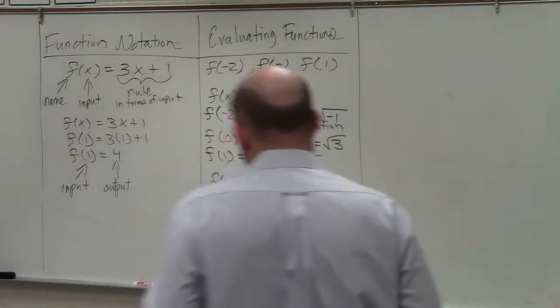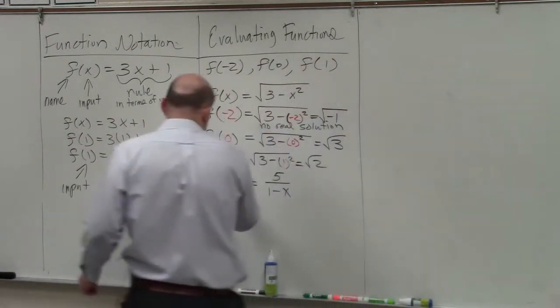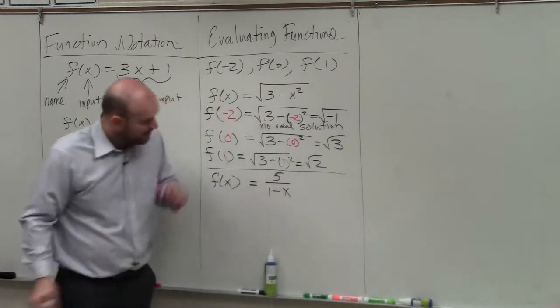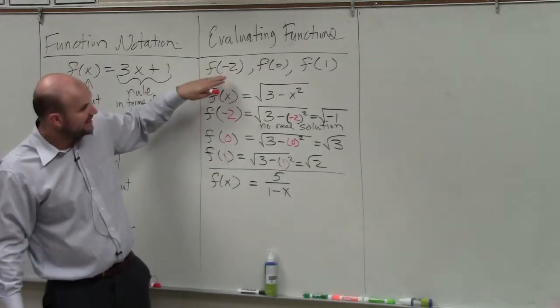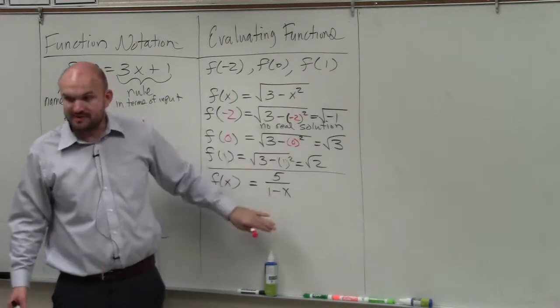Ladies and gentlemen, you're going to follow exactly the same rule. So if I have f of x equals 5 divided by 1 minus x, and I want to evaluate for these three values, you basically just replace your x in your rule with all three of these values.